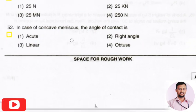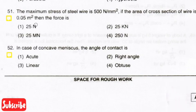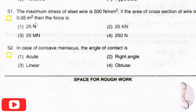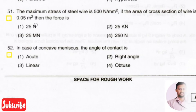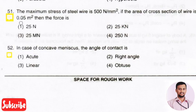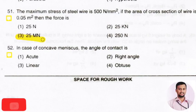The next question: the maximum stress of a steel wire is 500 N/mm². If the area of cross section of the wire is 0.5 m², then the force is? Stress and cross-sectional area are given. We know that stress = force / area, therefore force = stress × area = 500 × 0.05 = 25 mega newton. So the right answer is option 3, 25 MN.